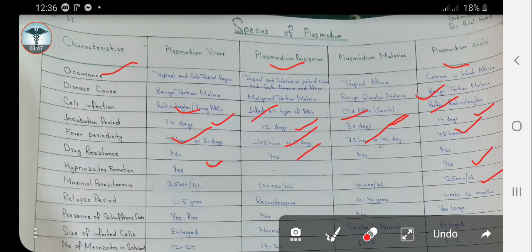Relapse period is highly variable. In Plasmodium vivax, relapse may occur up to two to five years. For Plasmodium falciparum, recrudescence may occur. Plasmodium malariae can relapse from 10 to 40 years. In Plasmodium ovale, the relapse period is from weeks to months.